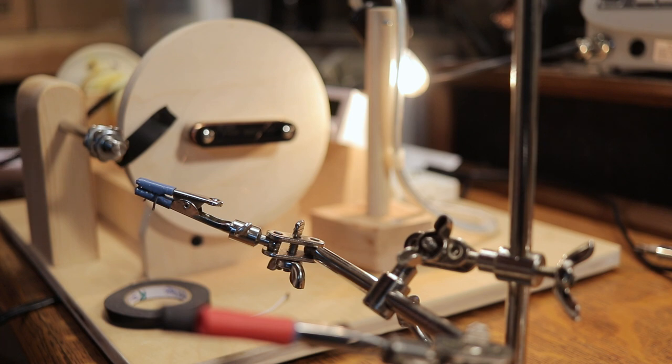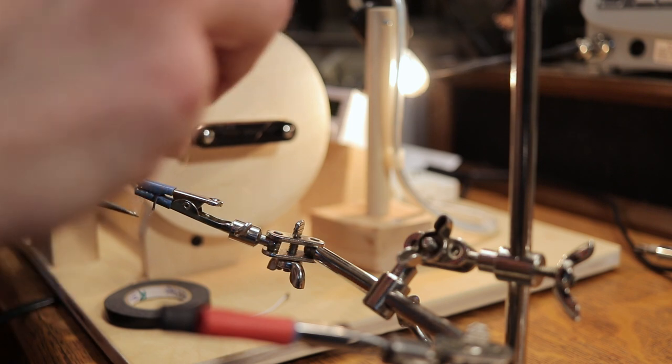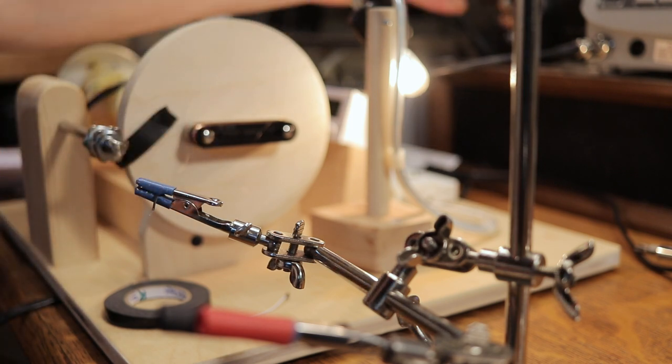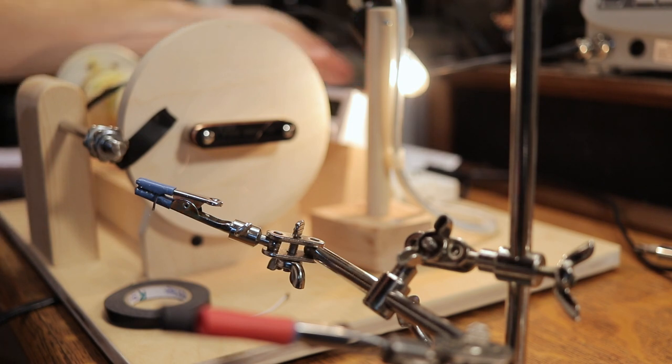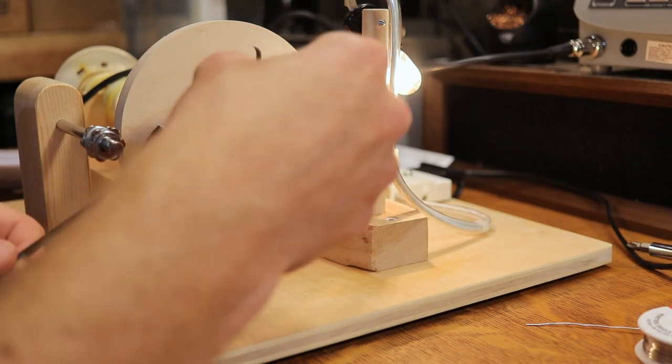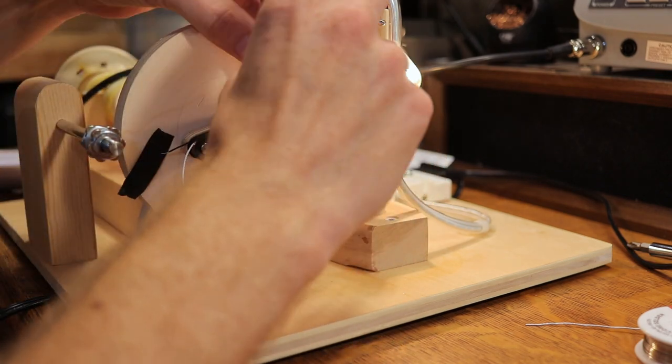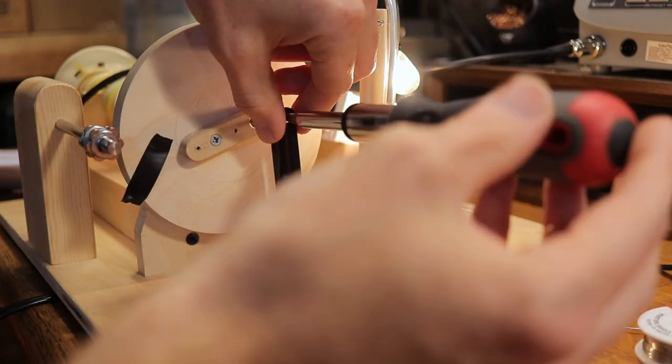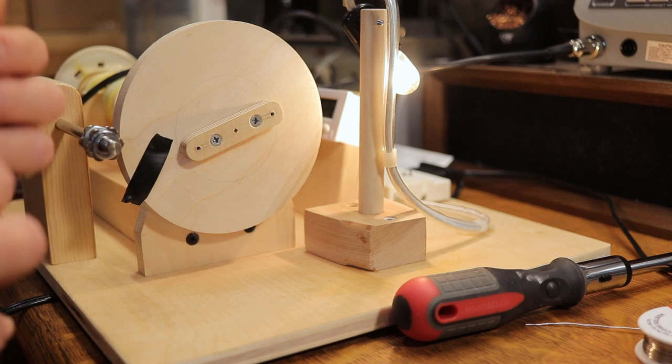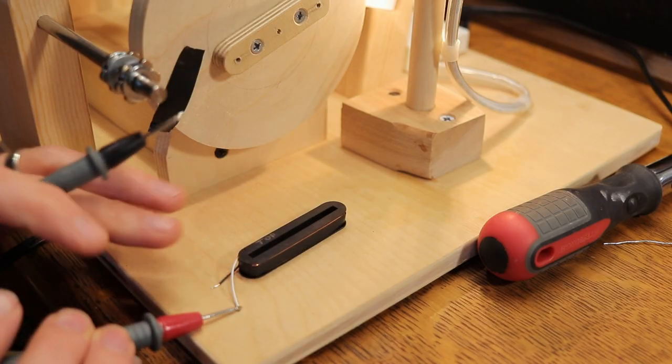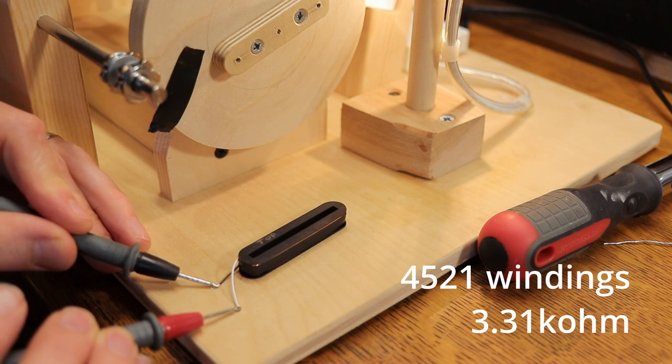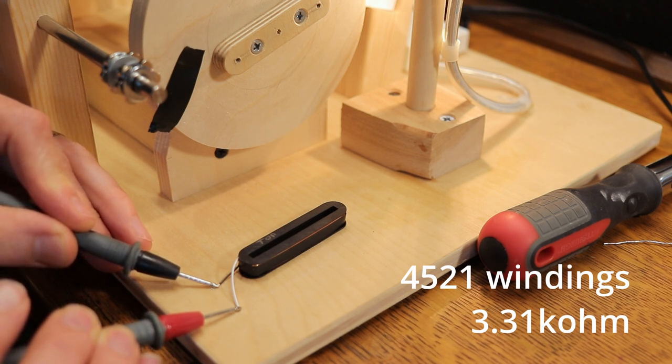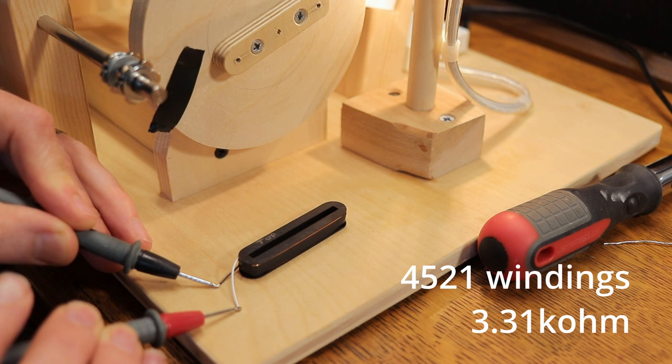Then we'll solder up the black wire to the start and try and tape this whole thing up without breaking anything. This pickup has 4,521 turns on it and a DC resistance of 3.31 kilo ohms.